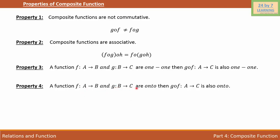g: B tends to C are onto, then g of f: A tends to C is also onto. In other words, we can say that if we want to connect two functions and both are onto functions, then the resultant function g of f is also onto function.